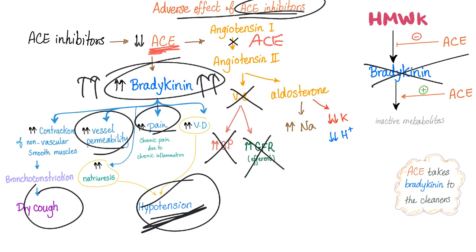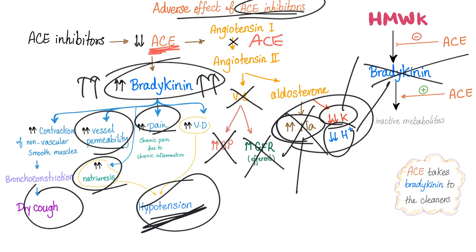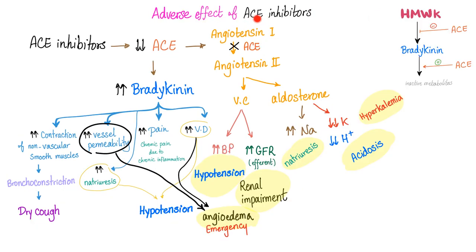With ACE inhibitors, there is no increase in sodium reabsorption, leading to natriuresis — loss of sodium. There is increased potassium reabsorption, leading to hyperkalemia. And increased hydrogen ion reabsorption, leading to metabolic acidosis. So the adverse effects of ACE inhibitors are: dry cough, angioedema, hypotension, renal impairment, natriuresis, acidosis, hyperkalemia, nausea, vomiting, and diarrhea.